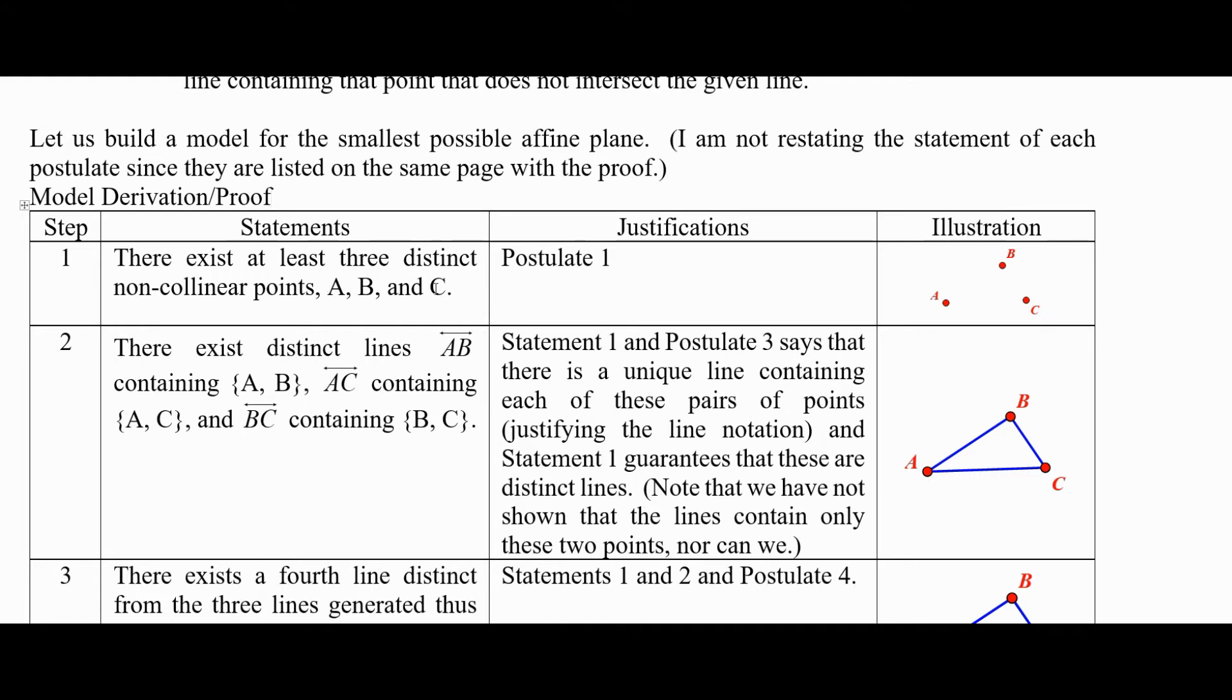Statement one said we have these three points and they're not collinear. Postulate three says there's a unique line containing each pair of points. Statement one guarantees that these are distinct lines. Why? Well, if these were the same line then A, B, and C would be collinear, which is contradicted by that original step.